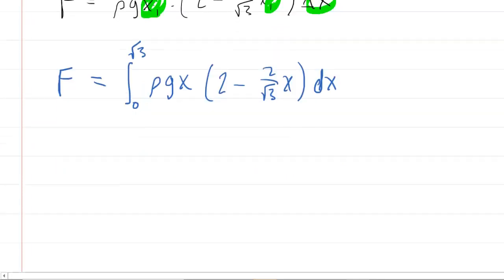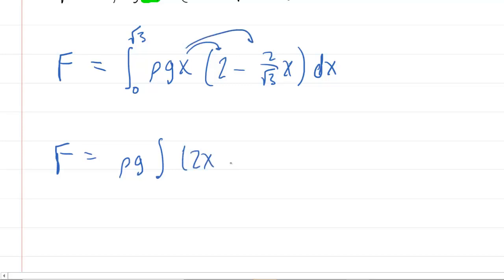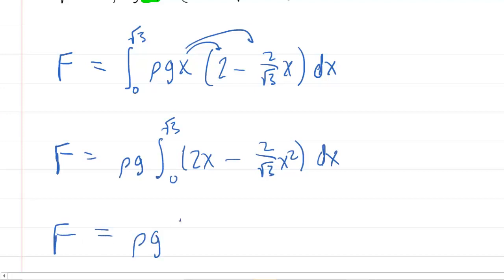We can factor out rho g to make the integration easier, and distribute the x to get 2x minus (2 over radical 3) x squared, integrating from 0 to radical 3. Applying the power rule: 2x integrates to x squared, and (2 over radical 3) x squared integrates to (2x cubed) over (3 radical 3). Evaluating from 0 to radical 3.